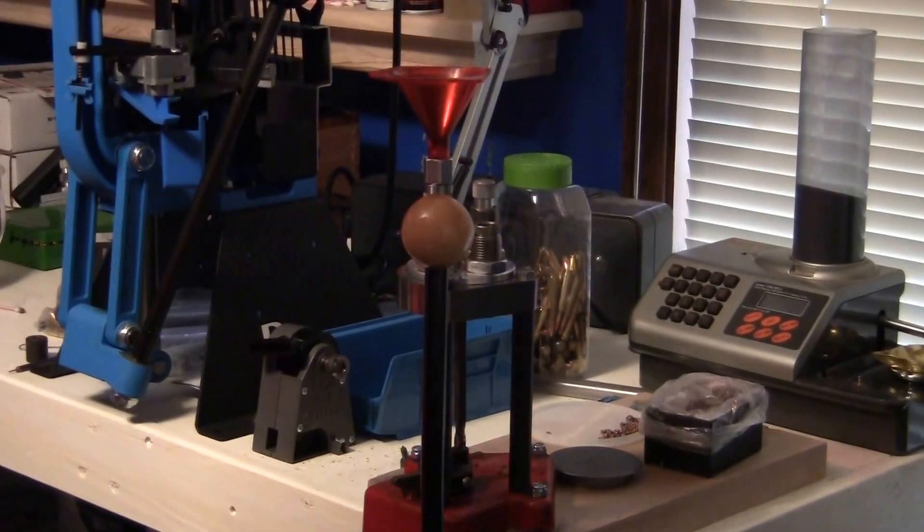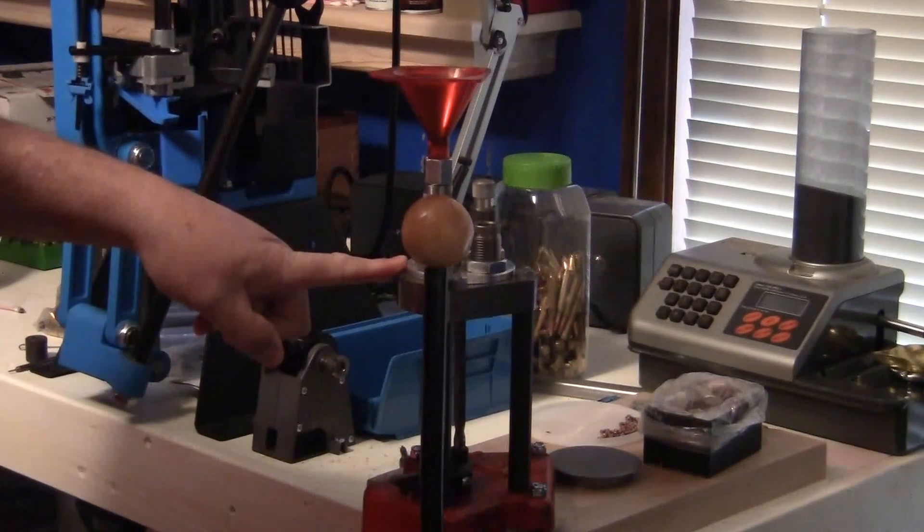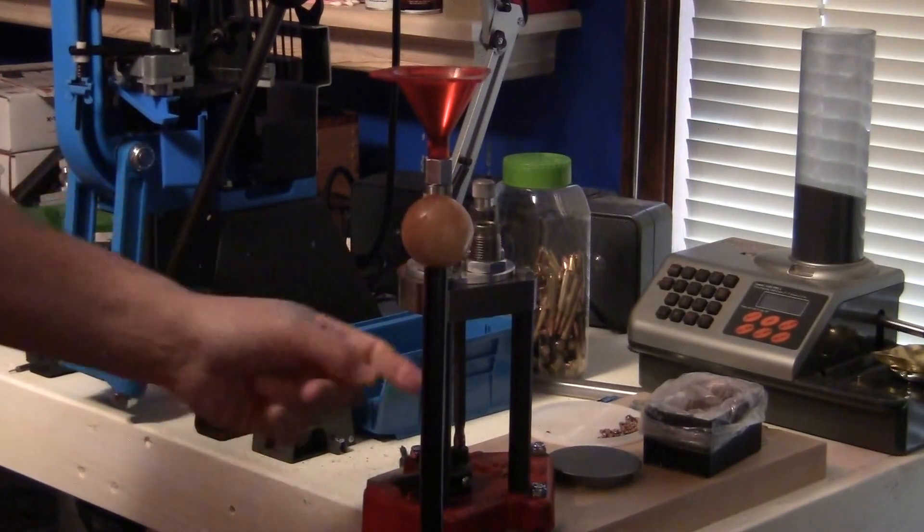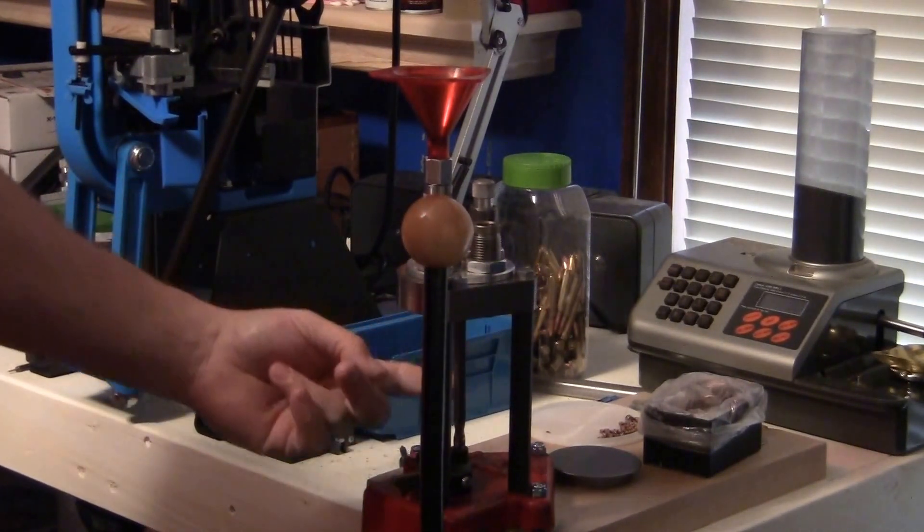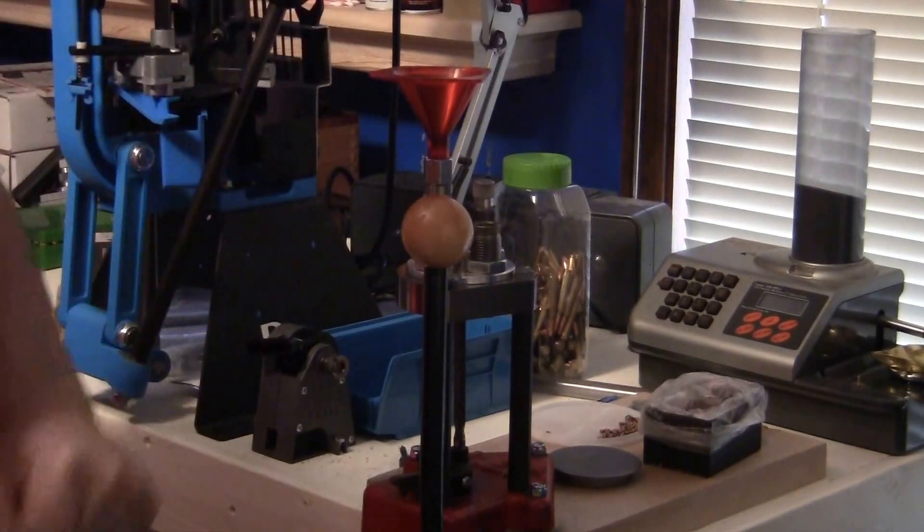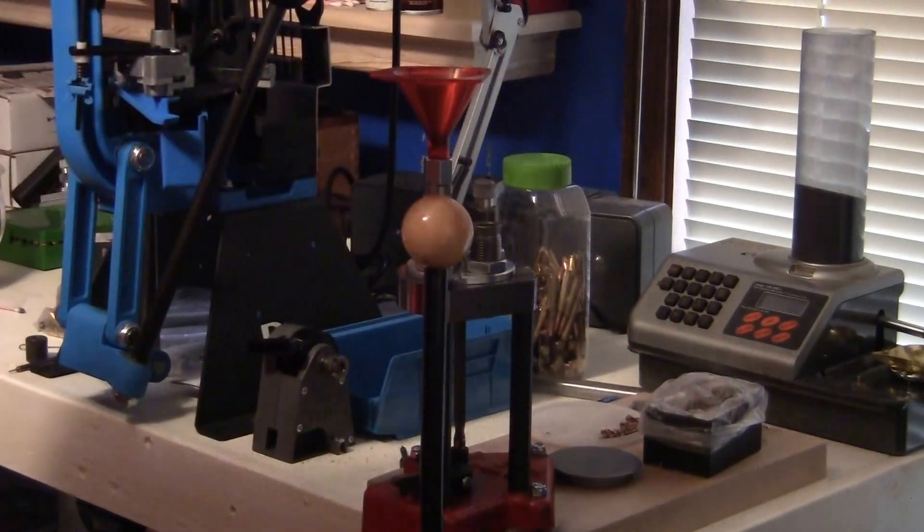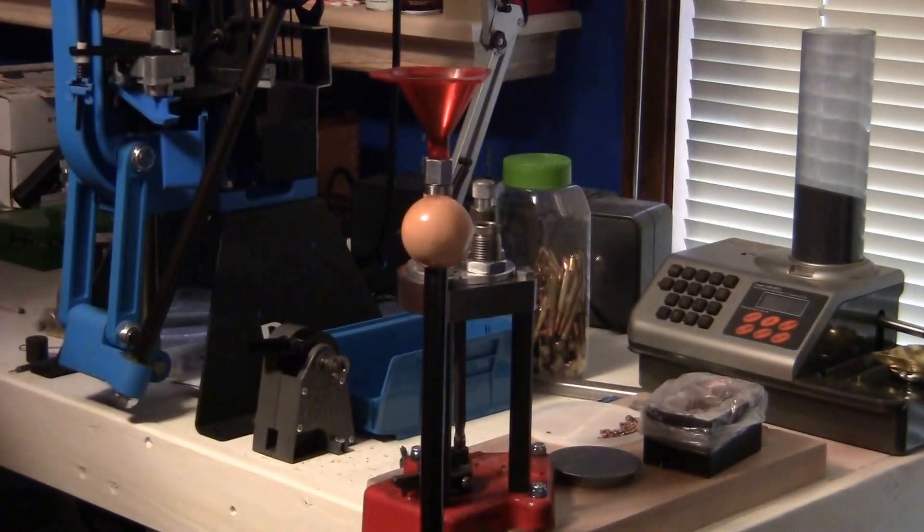Hey, good morning guys. I'm going to walk through a simple process using my Lee Classic Turret Press right here. It has the auto-index feature on it, which basically rotates the round one quarter turn to the next station whenever you bring it back down. I'm going to take some clean brass here.